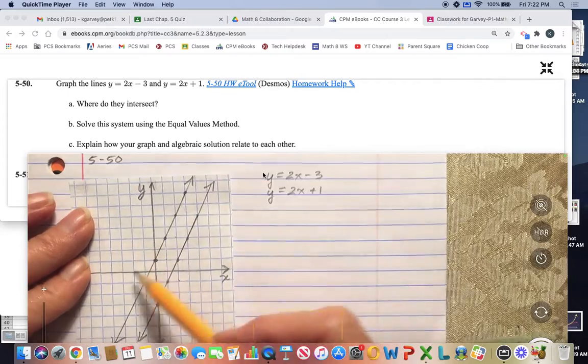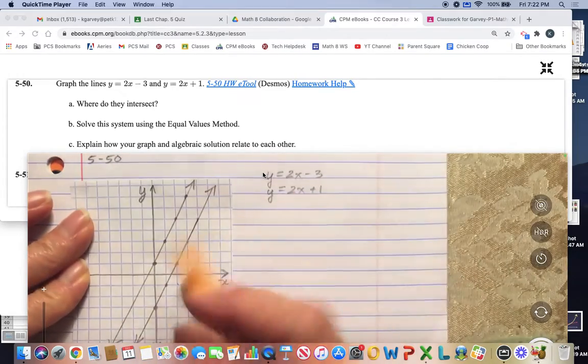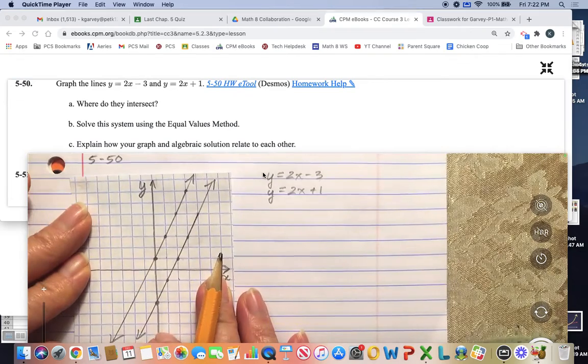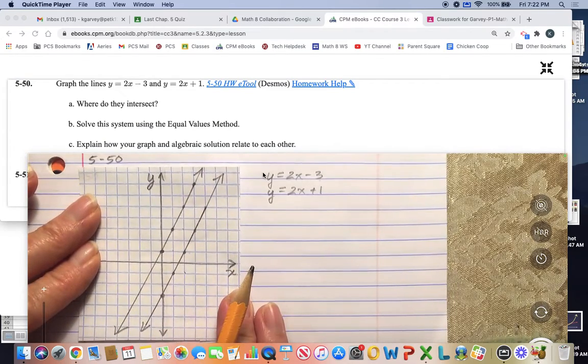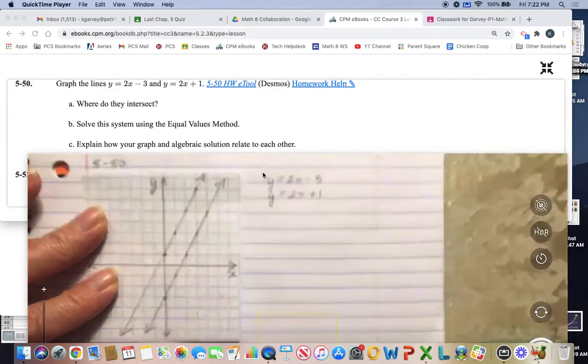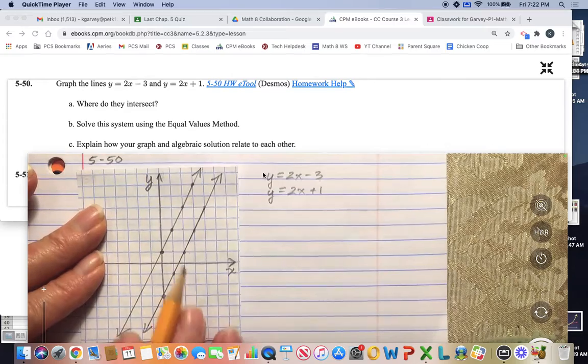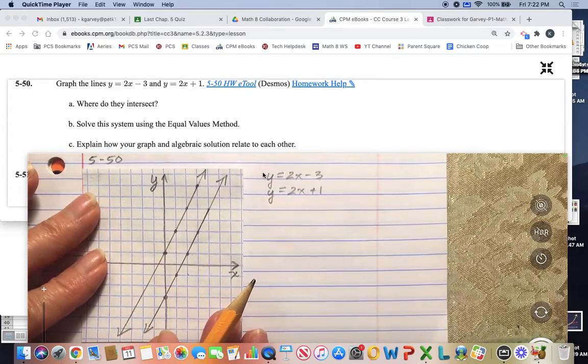Parallel lines go infinitely in both directions and will never meet. They will just run side by side in both directions and will never actually cross each other.